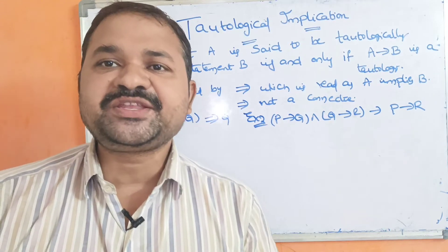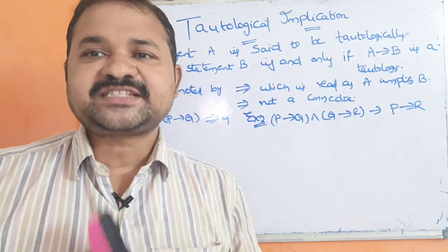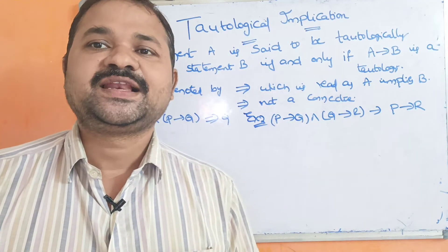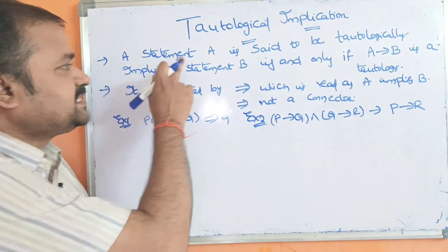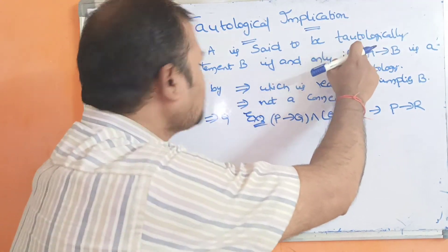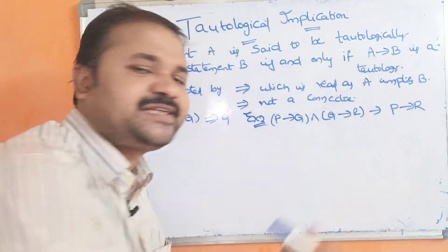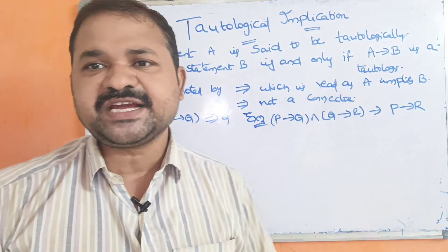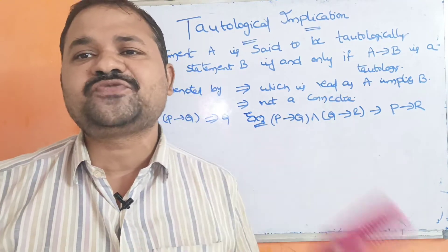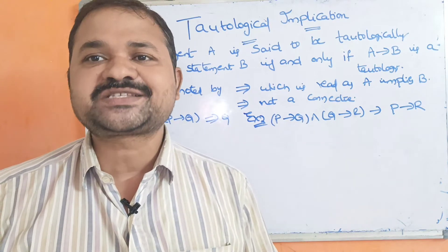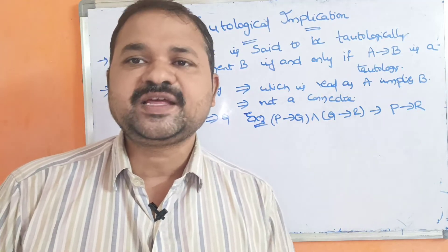In this video, we are going to discuss tautological implication. First, let's see what tautological implication is. A statement A is said to tautologically imply a statement B if and only if A implies B is a tautology. Tautology means if the final column produces all truth values as true, then it is called a tautology.